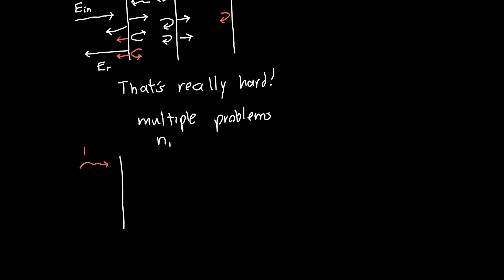If this is some interface anywhere within our structure, we know on the left-hand side — let's call this material zero and material one — in material zero we're going to have some rightward traveling wave and some leftward traveling wave. These electric fields are right at the interface, zero distance away, because we're just dealing with the interface. Then in material one we also have some rightward traveling wave and some leftward traveling wave.